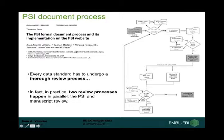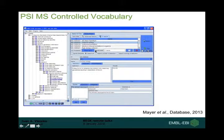All five data formats have in common that they went through a thorough review process similar to the review process of a manuscript — usually taking longer because the specifications can be quite complex to review and require different iterations. In practice, what has happened is that there are two review processes happening in parallel: the PSI one and the manuscript review. This ensures that the quality of the standard is quite good at the end.